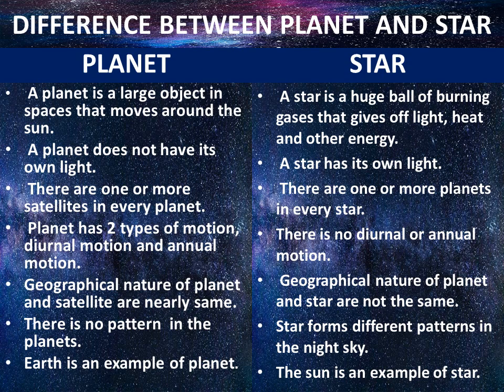Fifth difference: The geographical nature of a planet and its satellite are nearly the same, but the geographical nature of a planet and a star are not the same. Sixth difference: There is no pattern in the planets, but stars form different patterns in the night sky. Earth is an example of a planet and the Sun is an example of a star.